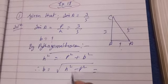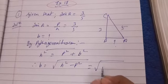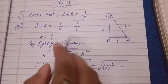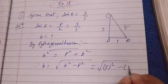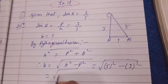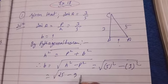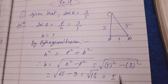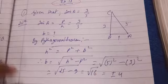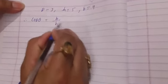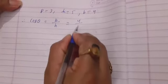Putting in the values: h is 5 and p is 3, so b equals root of 5 squared minus 3 squared, which is root of 25 minus 9, equals root of 16, giving b equals 4. So now we have: p equals 3, h equals 5, and b equals 4. Therefore, cos A equals b by h, which is 4 by 5.